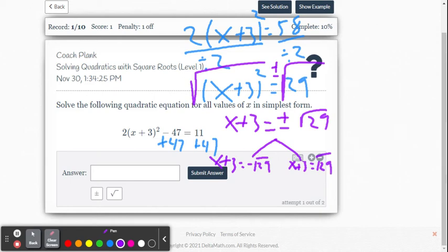All right, so we subtract 3 from both sides. We're going to get x equals negative 3 minus the square root of 29. And subtract 3 from both sides, we get x equals negative 3 plus the square root of 29.